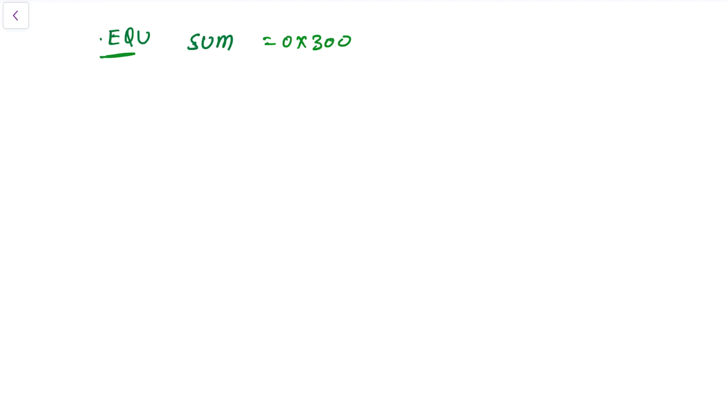So you see here, this .EQU is a kind of hash define in C language, in which I am defining sum equal to 0x300. Then the next instruction which we have is .ORG 00. So one thing you might ask: what is this .EQU and .ORG? This is known as a directive.